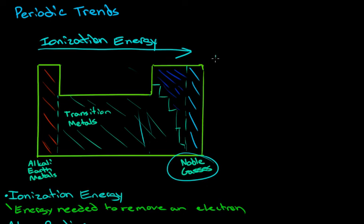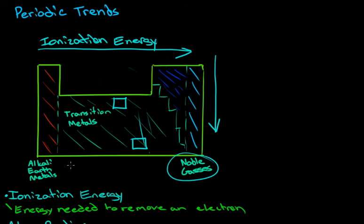Ionization energy will decrease going down a table. The reason is because we've added so many more electrons. If we look at an atom here it has a moderate amount of electrons, but if we compare it to an atom lower down, it has way more shells and way more electrons. Since we're trying to remove an electron from the outer shells, it doesn't take as much energy. It's like if we wanted to siege a city — it's easier to siege the houses around it because they're not as protected. Moving down the groups with many more electrons, the ionization energy will be less.